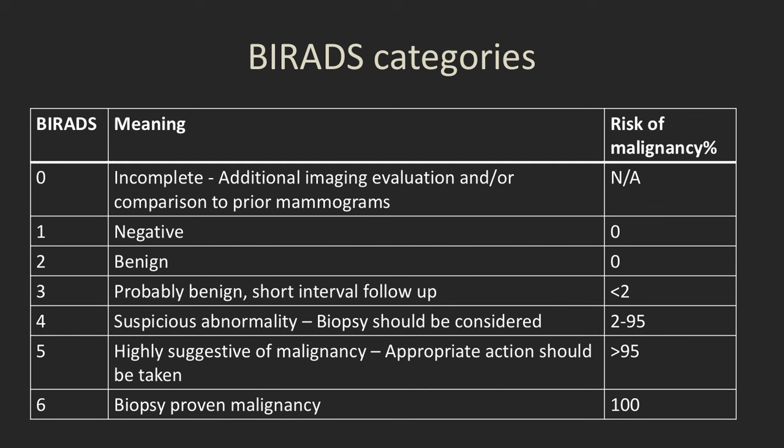BI-RADS 1 is negative and BI-RADS 2 is benign — effectively zero risk of malignancy. BI-RADS 3 is probably benign, short interval follow-up usually six months, and the risk of malignancy should be less than two percent. BI-RADS 4 — sometimes split into 4A, B, and C, with A being less suspicious than C — means suspicious abnormality, consider biopsy, with risk of malignancy ranging from two to 95 percent. BI-RADS 5 is highly suggestive of malignancy at greater than 95 percent, and category 6 is a malignancy that's already been biopsied.